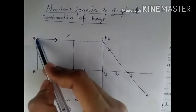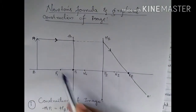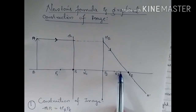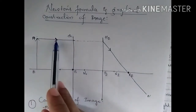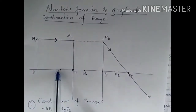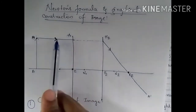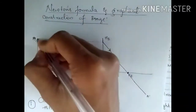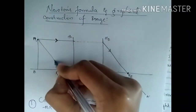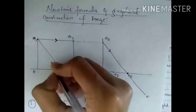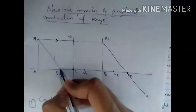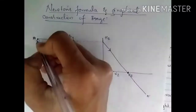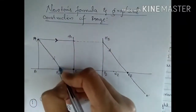Whenever a ray of light passes from a focal point, it emerges as a ray parallel to the principal axis. And whenever there is an incident ray parallel to the principal axis, that ray emerges out from the focal point. We are now supposed to draw the line passing from the principal focal point F1. This is the second ray.